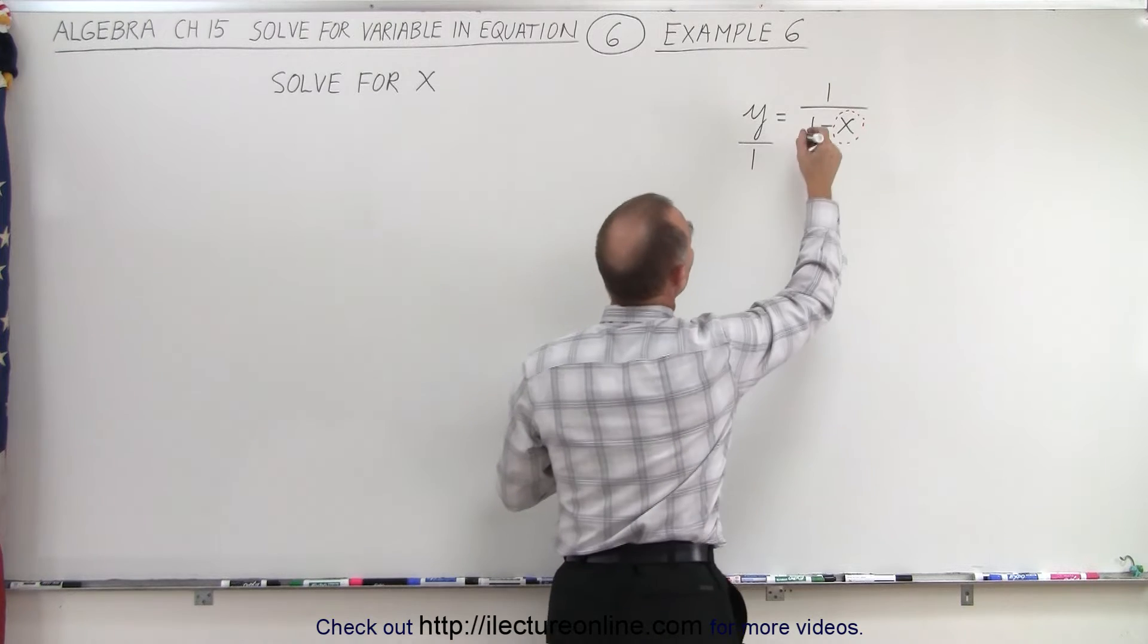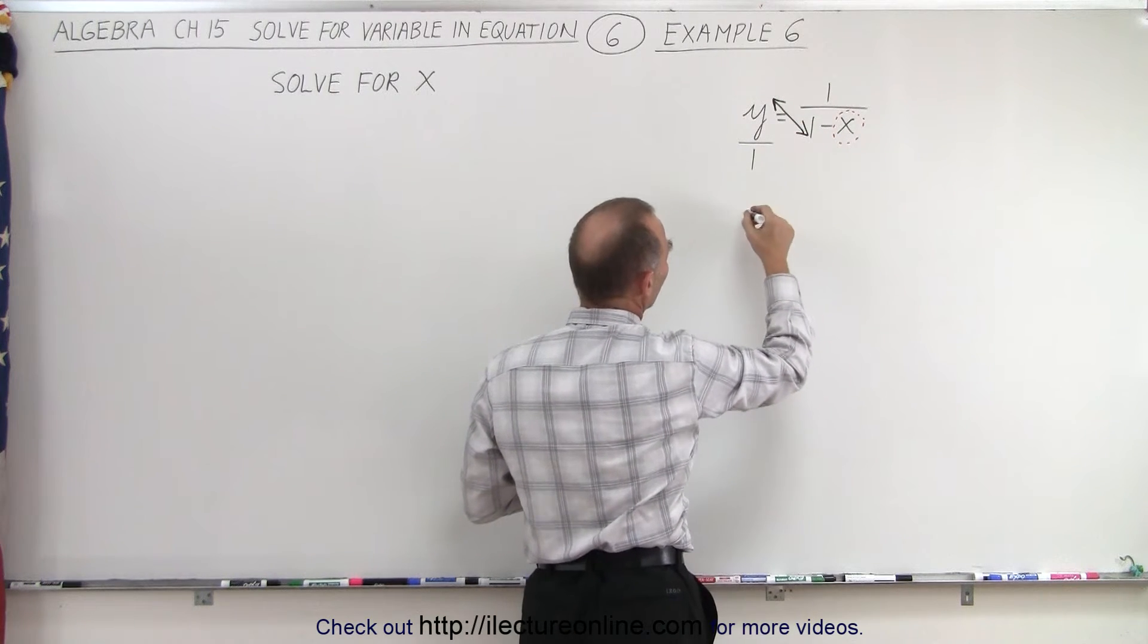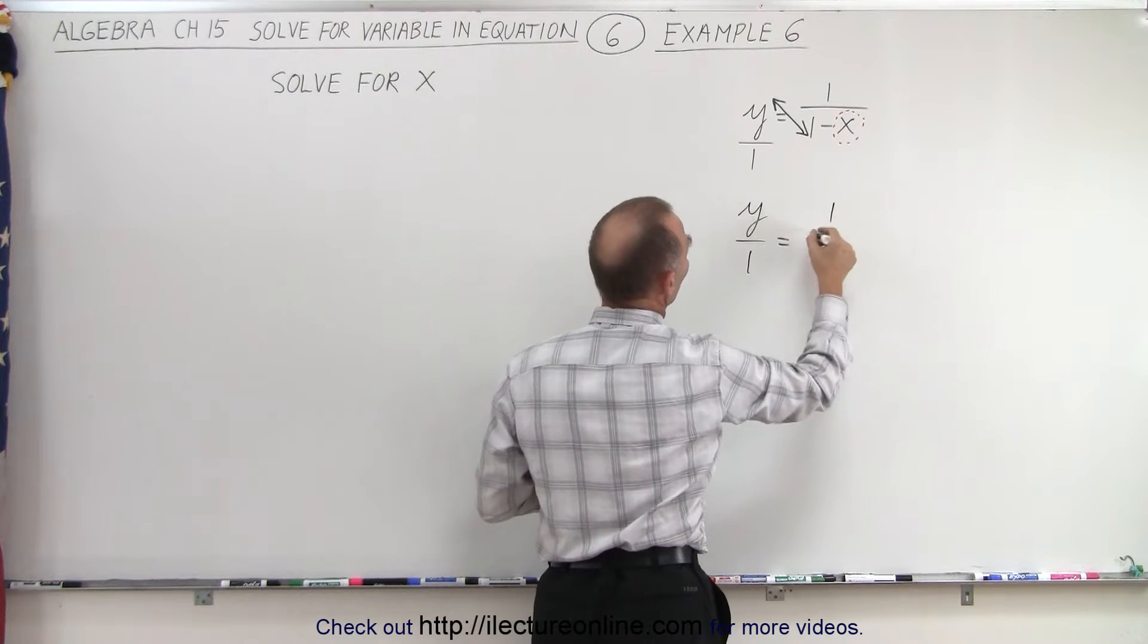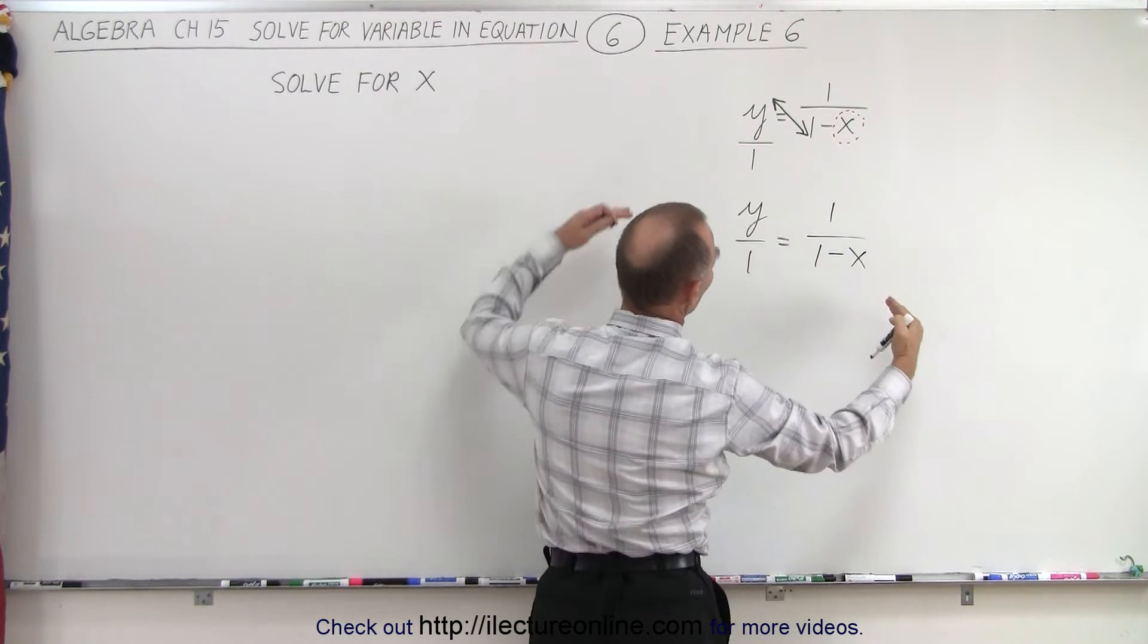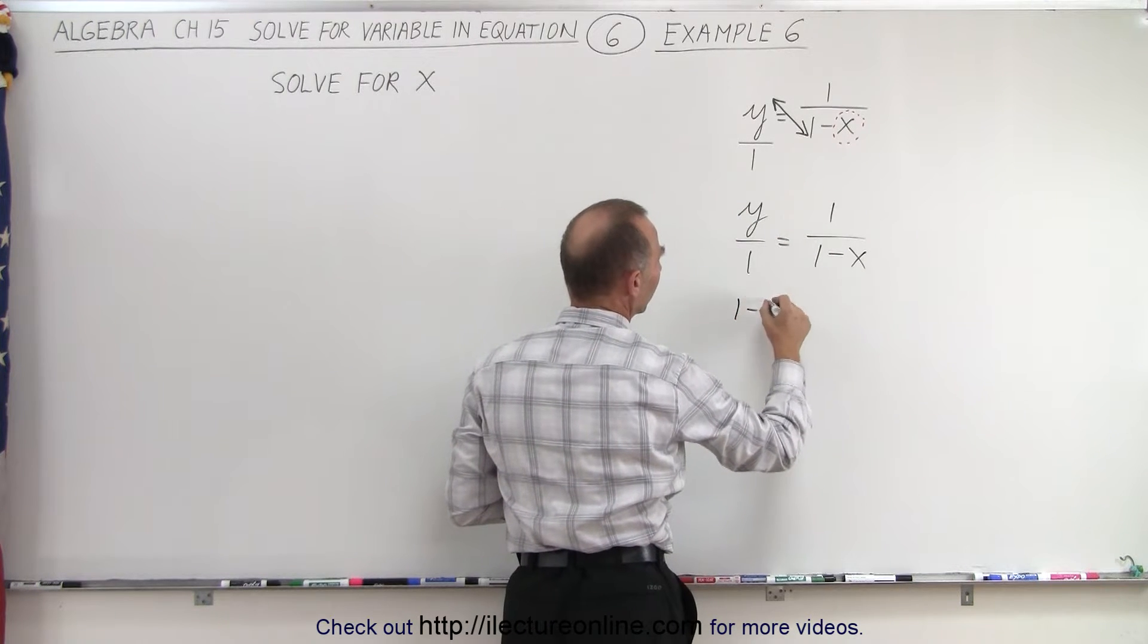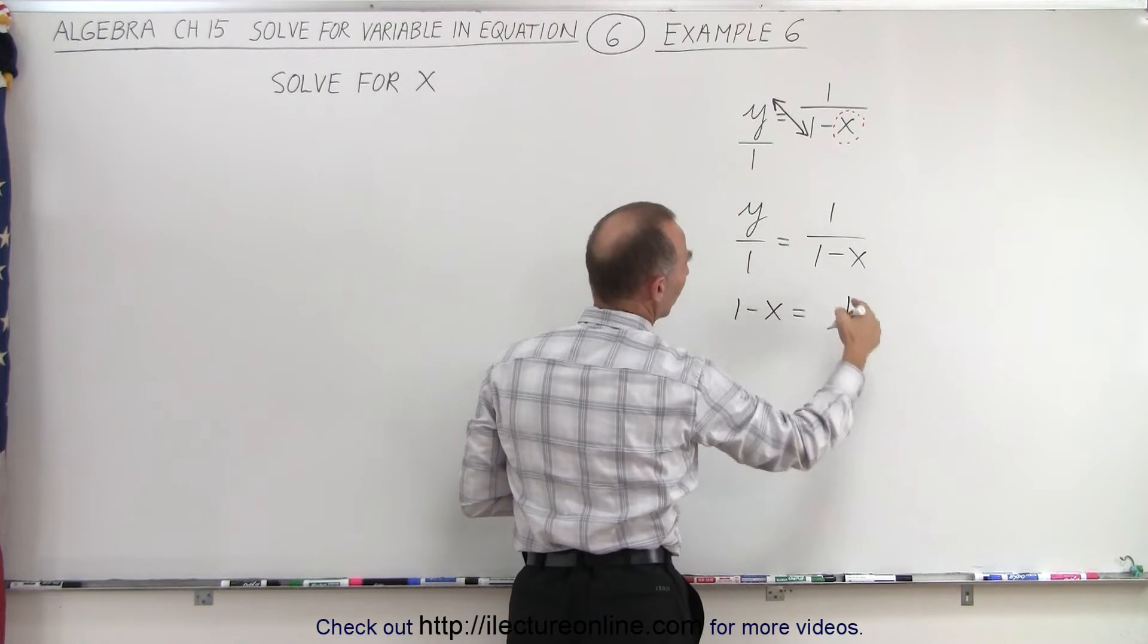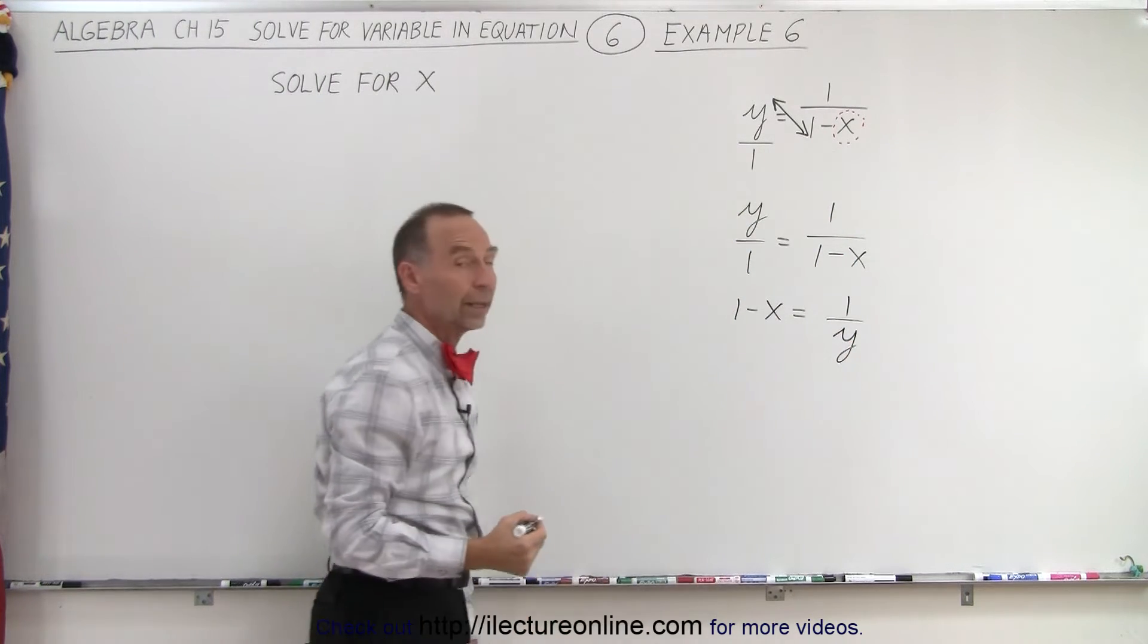In other words, we're going to move these across the diagonal like this, and like this. Let me rewrite it so it's a little clearer. y over 1 is equal to 1 over 1 minus x, so we're going to move things across the diagonal. So we end up with 1 minus x is equal to 1 times 1 is still 1, and the y comes down here. So we have now 1 over y.